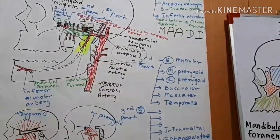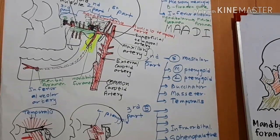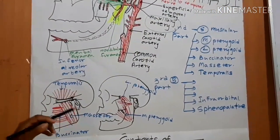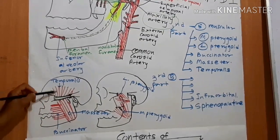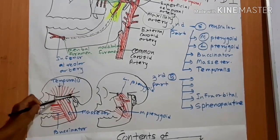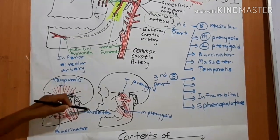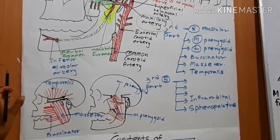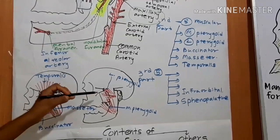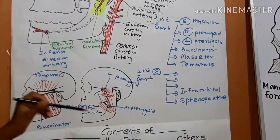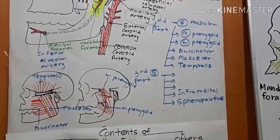From the second part there are five muscular branches. If we look at the superficial muscles we have three: temporalis, masseter, and buccinator — these three are supplied by the second part of the maxillary artery. The two pterygoid muscles inside the infratemporal fossa — lateral pterygoid and medial pterygoid — are also supplied by the second part of the maxillary artery.